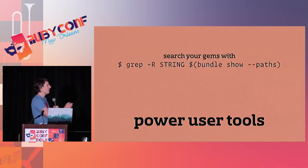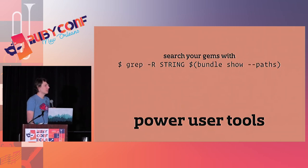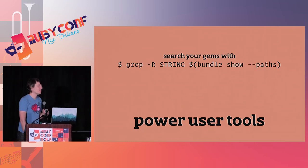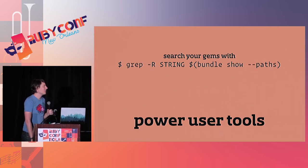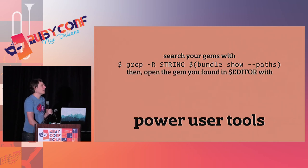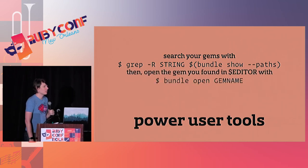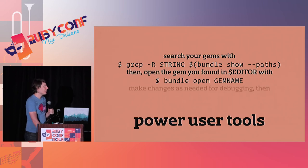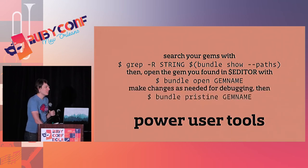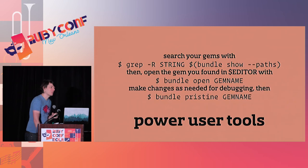You can search your gems using the bundle show --paths option which prints out all the paths your gems are in. When you find the gem you want, you can open it directly by running bundle open, edit it, finish your debugging, and then run bundle pristine to undo the changes you just made to that gem locally. It's a pretty good workflow.